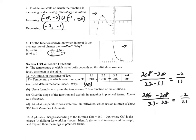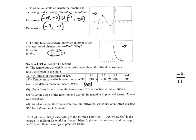Now we need a formula to express temperature T as a function of altitude. Since it's linear, we use the form y = mx + b. In our case, it's T = ma + b, where a is altitude. We already know the slope m is negative 2 over 1.1.